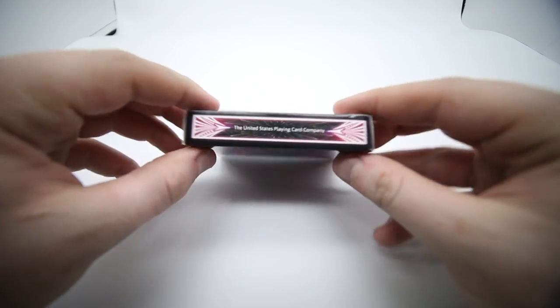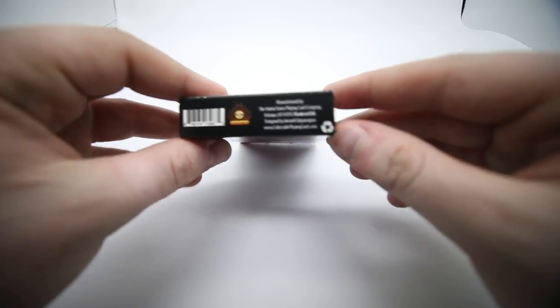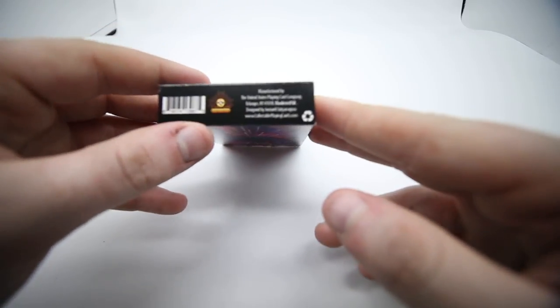It has air cushion finish and on the other side the United States Playing Card Company. On the bottom it has the Collectible Playing Cards logo and it says manufactured by the United States Playing Card Company and a barcode.